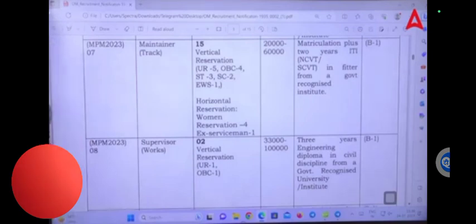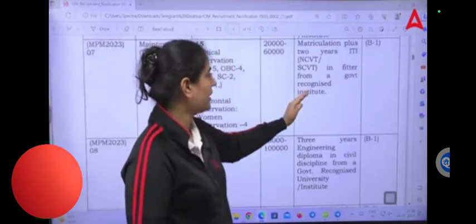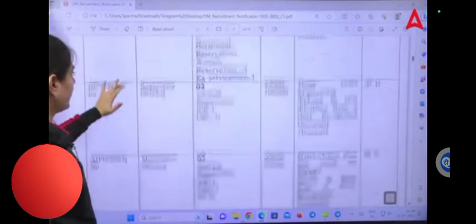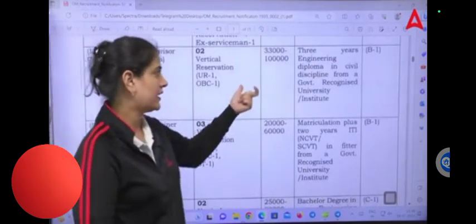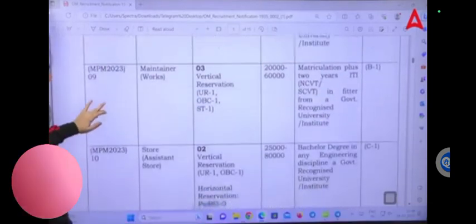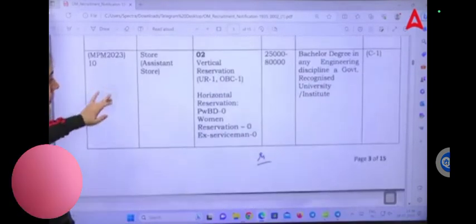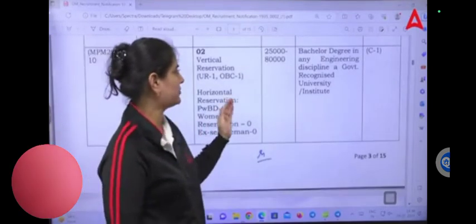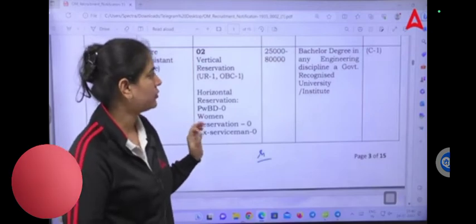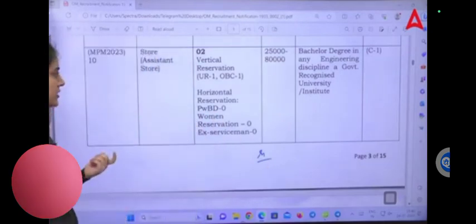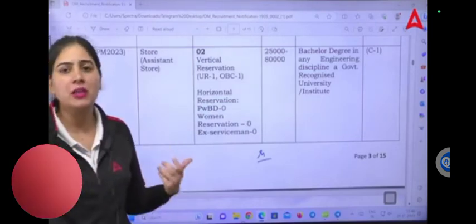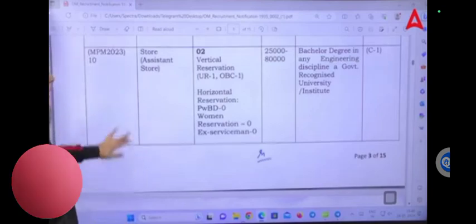Next is Maintainer in Track with 15 posts at 20,000 to 60,000. Same ITI in fitter. You have Store Assistant with 33,000 salary. If you have bachelor degree in any engineering discipline from government recognized university, and if you come to C1 medical category, you can apply for this Store Assistant post.